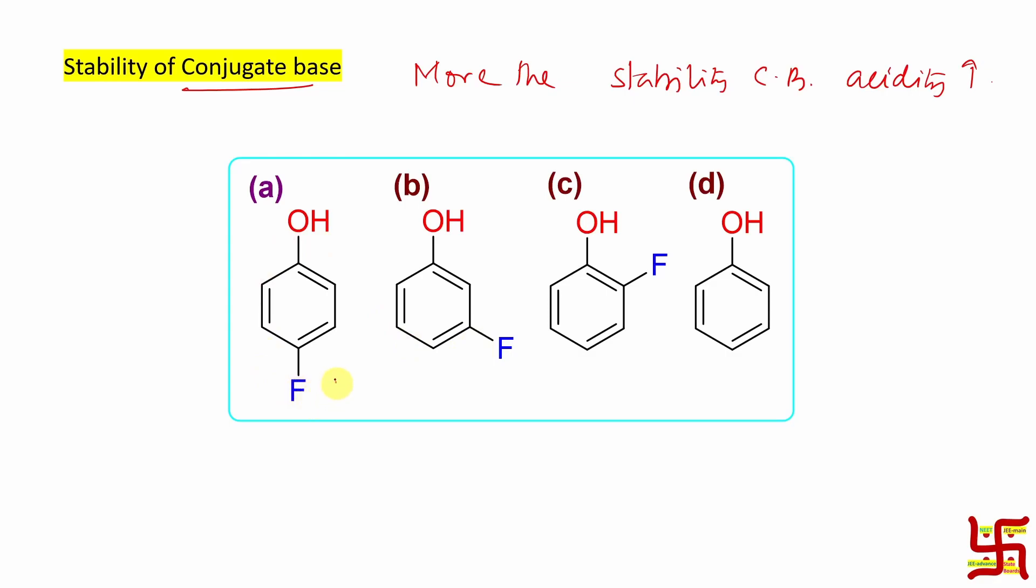In order to get it, we need to draw the conjugate base of our 4 structures. Here actually hydrogen from this OH group will be released and it will produce the corresponding phenoxide ion which will be stabilized. Now here if you look at actually main comparison is phenol versus fluorophenol. This fluorine could be ortho, it could be para or it could be meta.